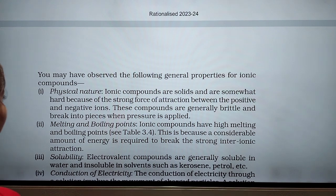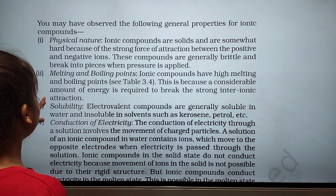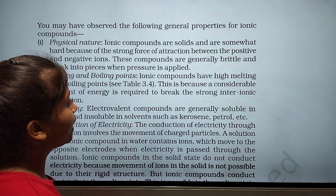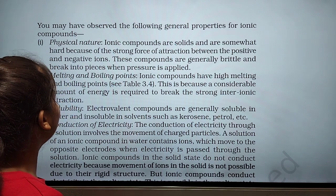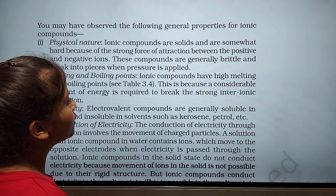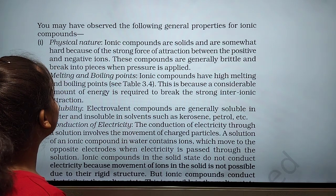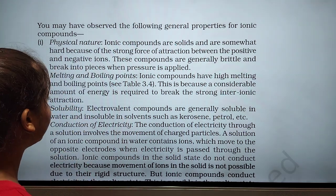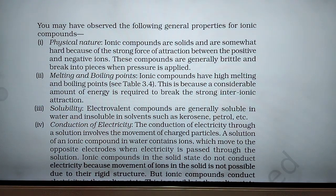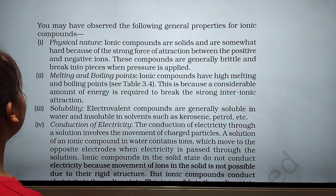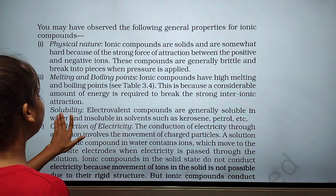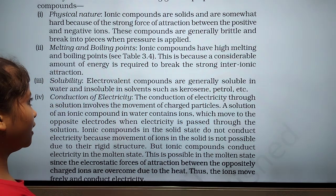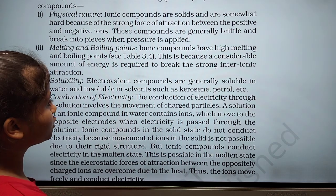The second property is the melting and boiling point. Ionic compounds have high melting and boiling points. This is because a considerable amount of energy is required to break the strong ionic bonds in the compound. After that, solubility: electrovalent compounds are generally soluble in water and insoluble in solvents such as kerosene, petrol, etc.